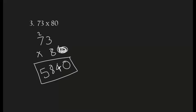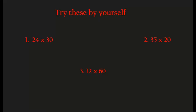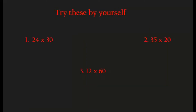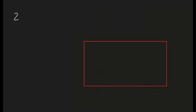So now why don't you try these problems by yourself? Take your time and pause this video. Did you get an answer? Well now let's see if it's right. Our first problem is 24 times 30. Let's go to the rectangle — the box. So our problem is 24 times 30.